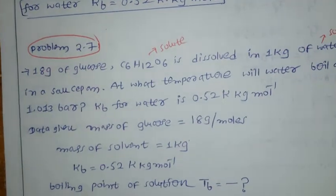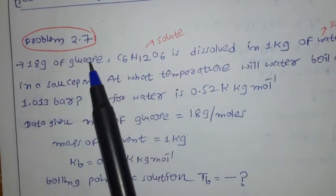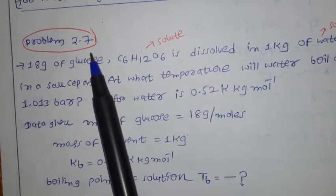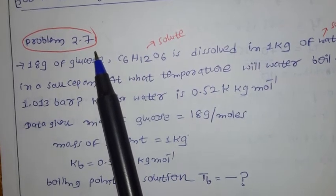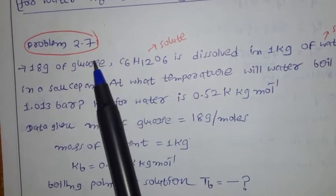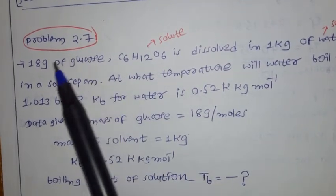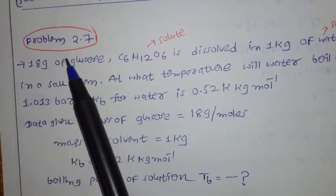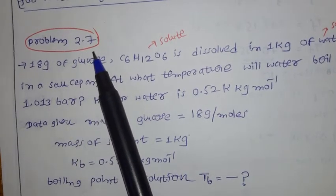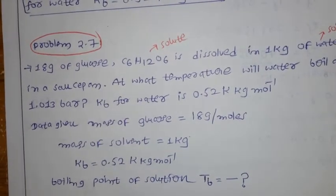Hello students. In the last video we discussed the qualitative properties — that is elevation of boiling point and depression of freezing point. Now let us discuss numerical problems. This is problem number 2.7.